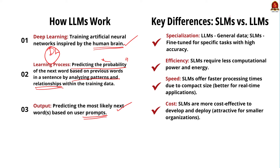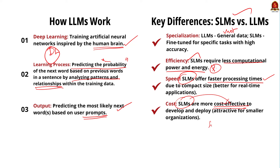Now let us see the key differences between small language models and large language models. Firstly, specialization: while large language models are trained on vast amounts of general data, small language models excel in specialization through fine-tuning, achieving high accuracy in narrow contexts. Secondly, computational efficiency: small language models require significantly less computational power and energy compared to large language models. Thirdly, inference speed and latency: the compact size of small language models enables faster processing times, making them more suitable for real-time applications. Fourthly, cost-effectiveness: development and deployment of small language models are often more cost-effective, making them attractive for smaller organizations with limited budgets.